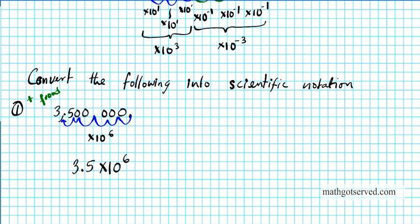Ten to the sixth is one million — six zeros. This explanation shows why we introduce these factors: it's just to ensure that we're not changing the original number.